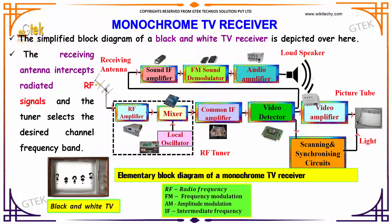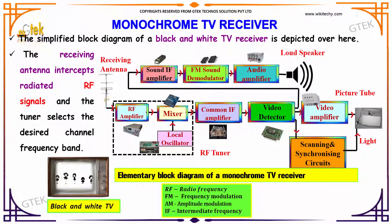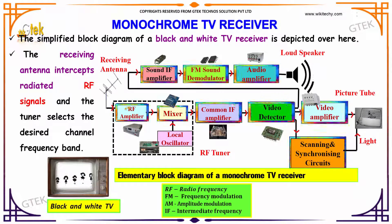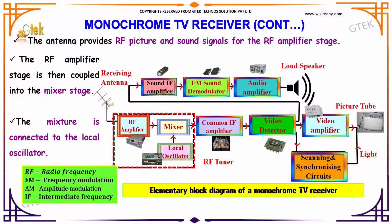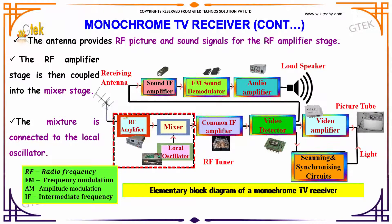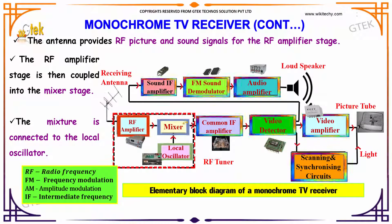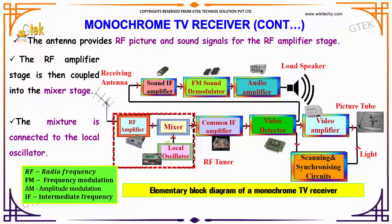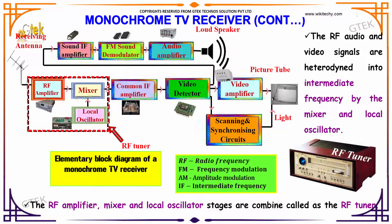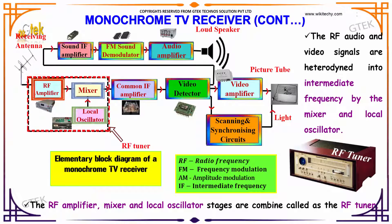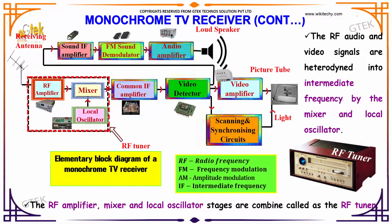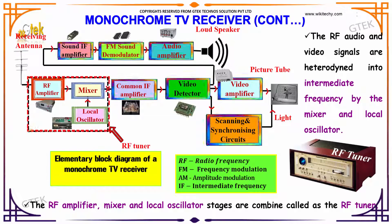The receiving antenna intercepts the radiated RF signal, and the tuner selects the desired channel frequency band. The antenna provides RF picture and sound signals to the RF amplifier stage, which is then coupled into the mixer stage. The mixer is connected to the local oscillator, which is used for filtering the particular frequency. The RF audio and video signals are heterodyned into intermediate frequency by the mixer and local oscillator. The RF amplifier, mixer, and local oscillator stages are collectively called the RF tuner.